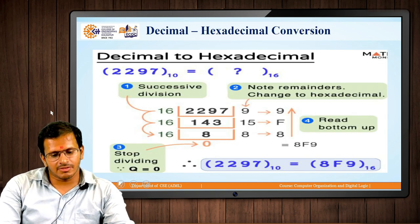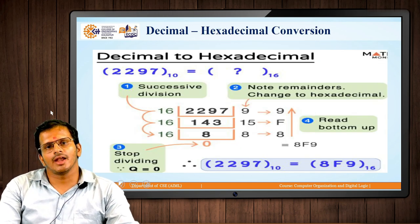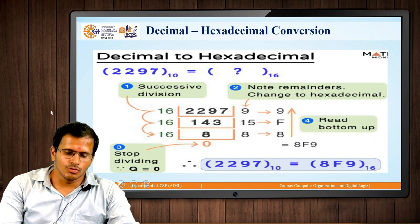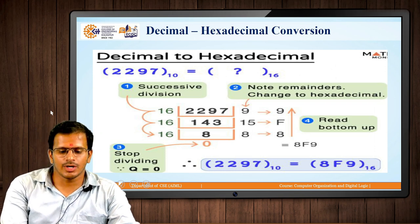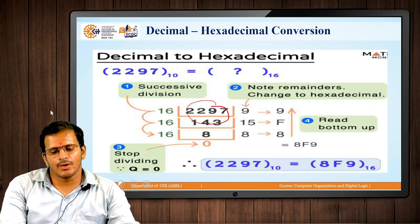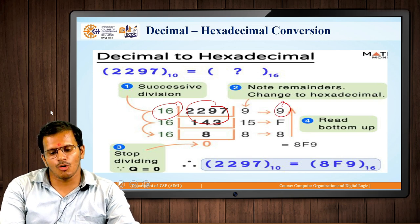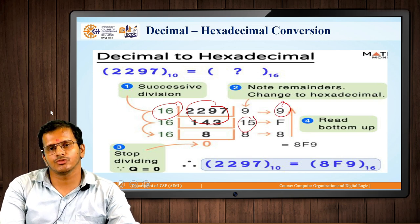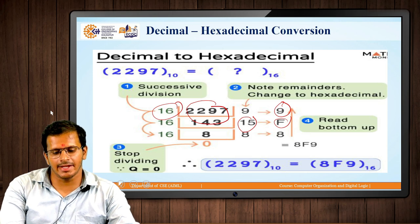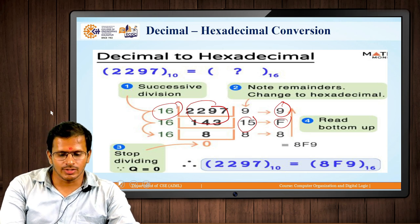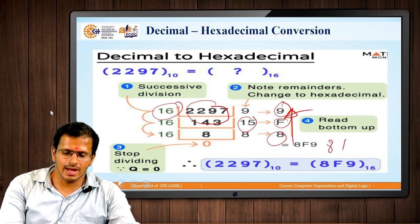The next part is the conversion of decimal to hexadecimal. If the decimal number is 2297, it is divided by 16 and the remainder values are obtained. For example, a remainder of 15 is equivalent to F. Using the downward-to-upward approach, the value will be 8F9 in hexadecimal.